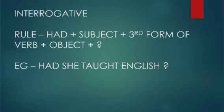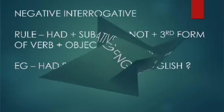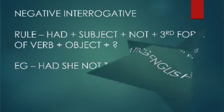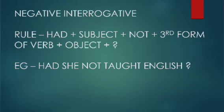Interrogative: Had plus subject plus third form of verb plus object plus question mark. Example: Had she taught English? Negative Interrogative rule: Had plus subject plus not plus third form of verb plus object plus question mark.